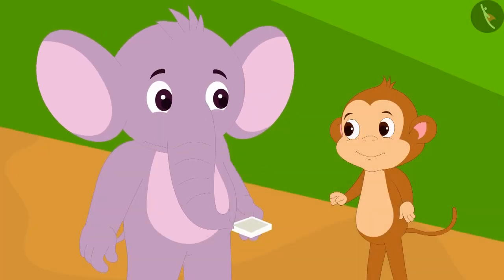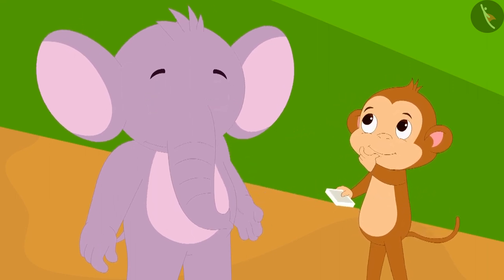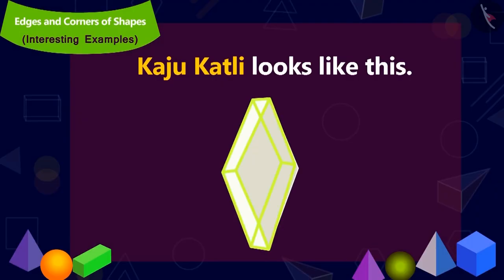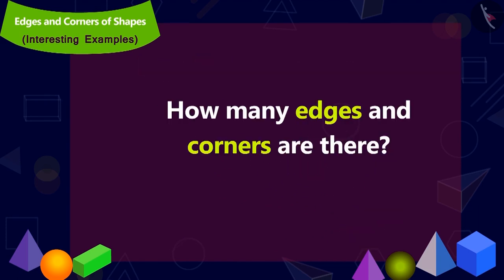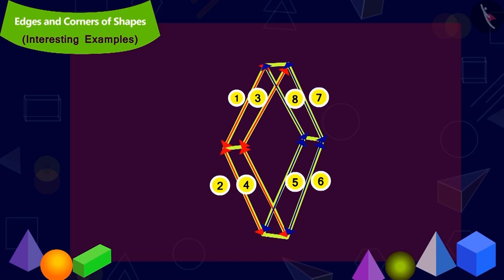Now Appu gave Babban a kaju katli. Babban thought for a while. Children, can you also think along with Babban — how many edges and corners does the kaju katli have? A kaju katli looks like this. Can you say which are the edges of this sweet? Yes, these are the edges of the sweet. How many edges in total? 12.